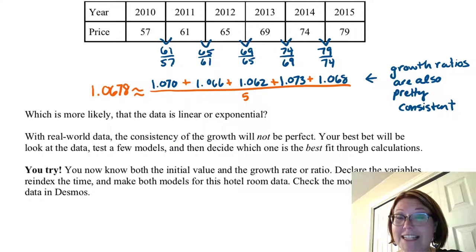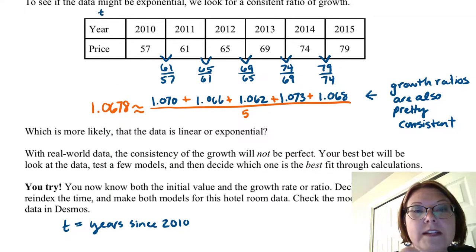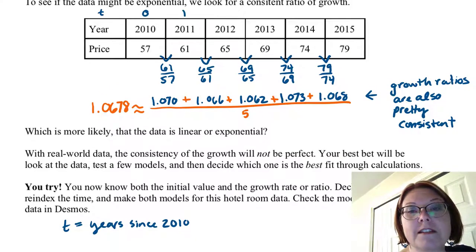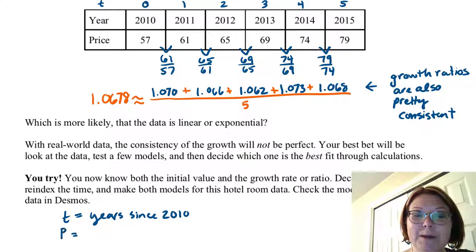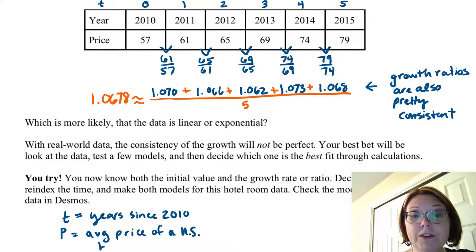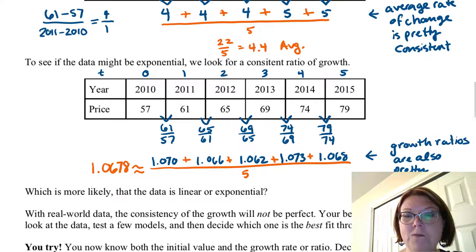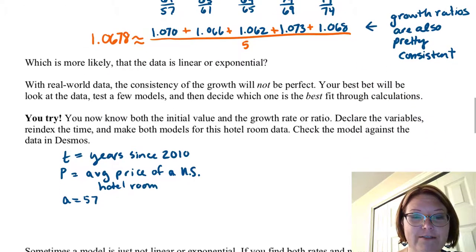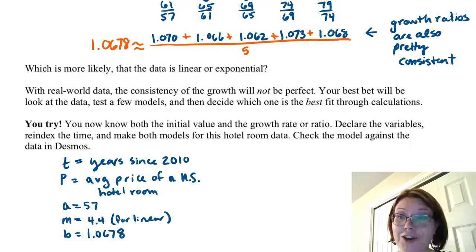Before I make these two models, I need to declare the variables. So let's start by re-indexing the time. Let's let t be the number of years since 2010. That means in our tables, 2010 is t equals 0, 2011 t equals 1, and then moving across the table until we get to 2015 being t equals 5. Let's declare capital P to be the average price of a U.S. hotel room. Now we do also know the initial value, which is when time is zero, is 57. And if we're doing a linear model, we know that the slope is that 4.4, the average of our average rate of change. And for the exponential model, I know the B value, the growth factor, is 1.0678. That's the average of the growth ratios.